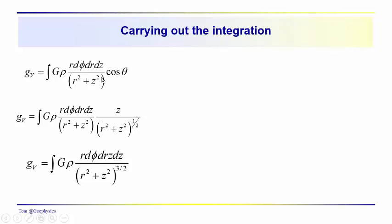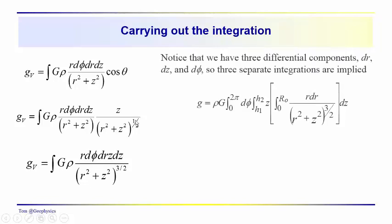Working through that, substituting for the cosine of theta, we get this additional factor z over (R² + z²)^(1/2). That gives us the differential volume element times z over (R² + z²)^(3/2). So this is the integral we have to work with, and notice that we have three different integrations — three differential components — so we have to do three integrations.